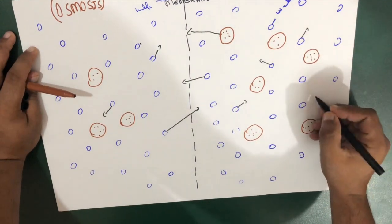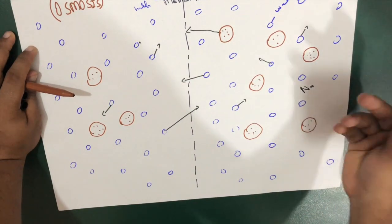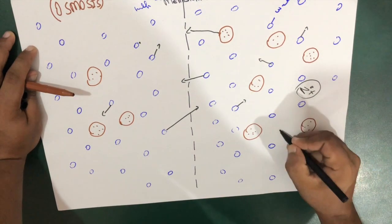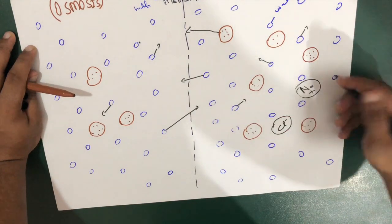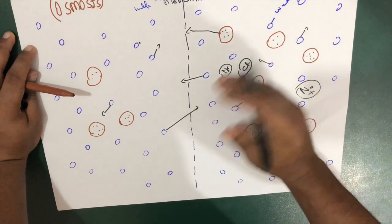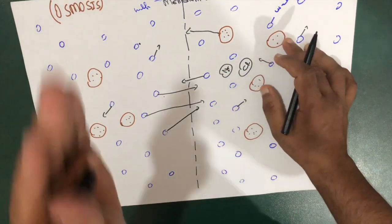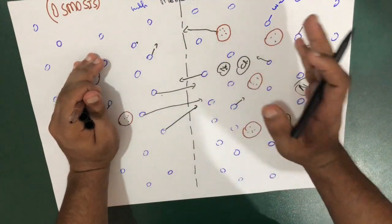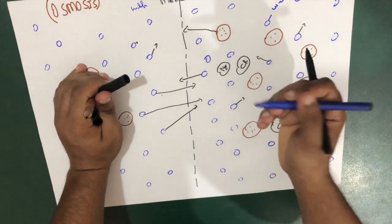A good example is sodium chloride, which is table salt. When dissolved in solution, it breaks into sodium, which is positive, and chloride, which is negative. These ions attract more water toward that side, decreasing the water level on the other side of the semi-permeable membrane and increasing the number of water molecules on the solute side.